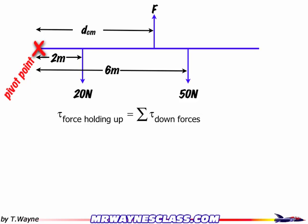So what I'm going to do is I know that the beam's not rotating. So the torque that's holding it up, that is where my F is times the D subscript CM, that's equal to the sum of all the torques of the forces going down. That's the 20N and the 50N. So I'll set this up as the torque holding it up, that's the force times the distance, is equal to 20 times 2 plus 50 times 6 because they're balancing each other out.